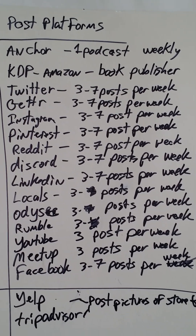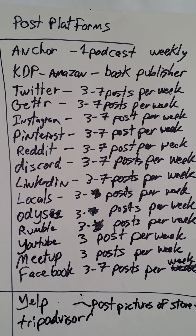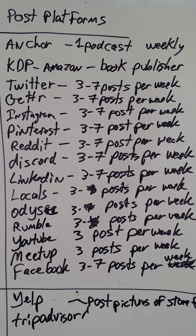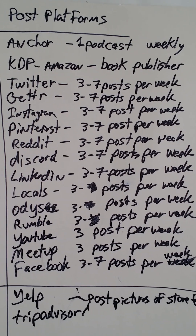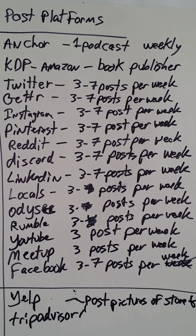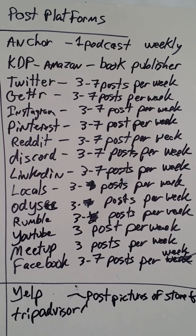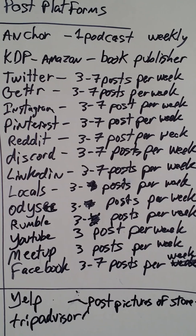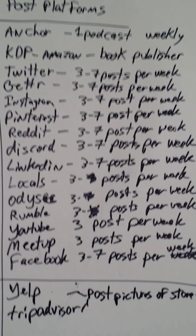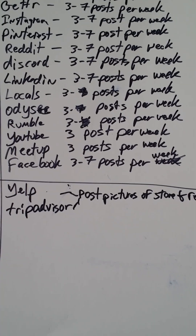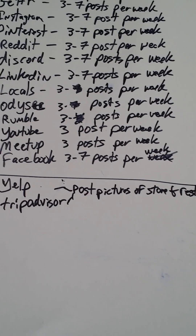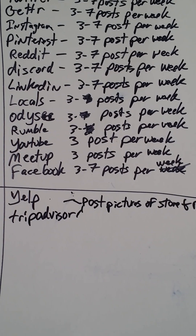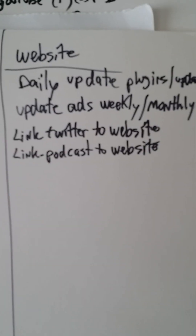Getter is like Twitter — three to seven posts per week. Instagram, Pinterest, Reddit, Discord, and LinkedIn are all three to seven posts per week. Locals and Odyssey are three per week — Odyssey is a video platform. Rumble is video at three per week. YouTube is three per week. Meetup is three posts per week if you have a meetup group. Facebook is three to seven posts per week.